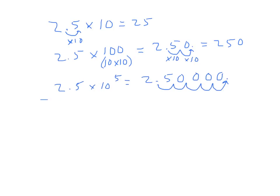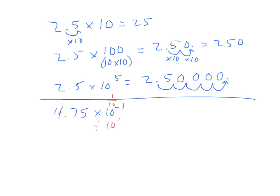Now let's take a look at the example where we would do negative exponents. So 4.75 times 10 to the negative 1. We can recognize that 10 to the negative 1 is actually the same as 1 over 10. And that means this is also the same as just dividing by 10 to the 1 power. So in this case, because we're dividing, we are going to be moving the decimal to the left. So we end up getting 0.475.